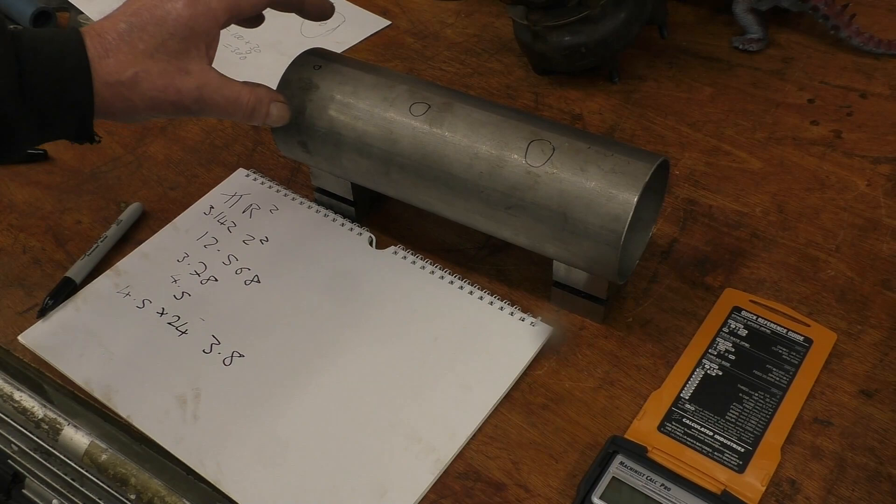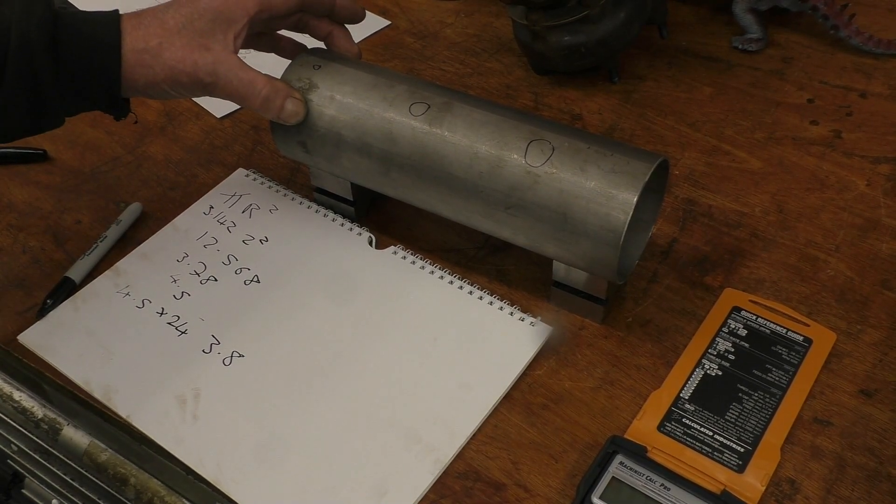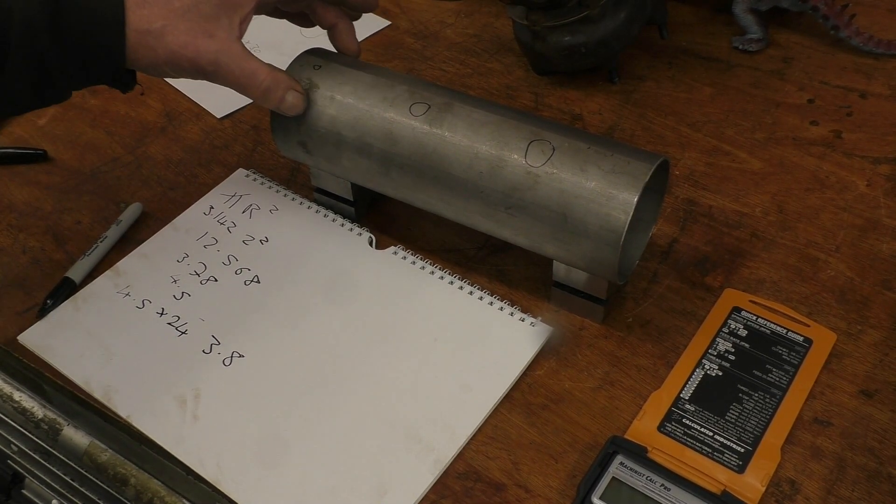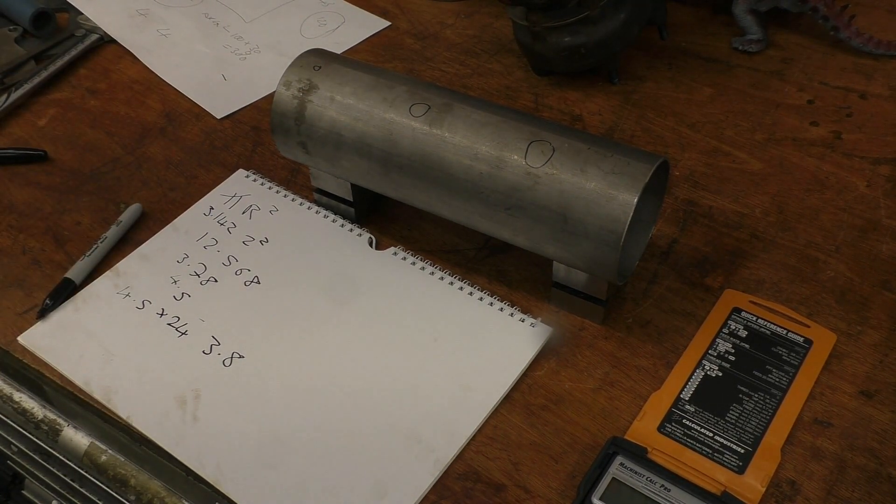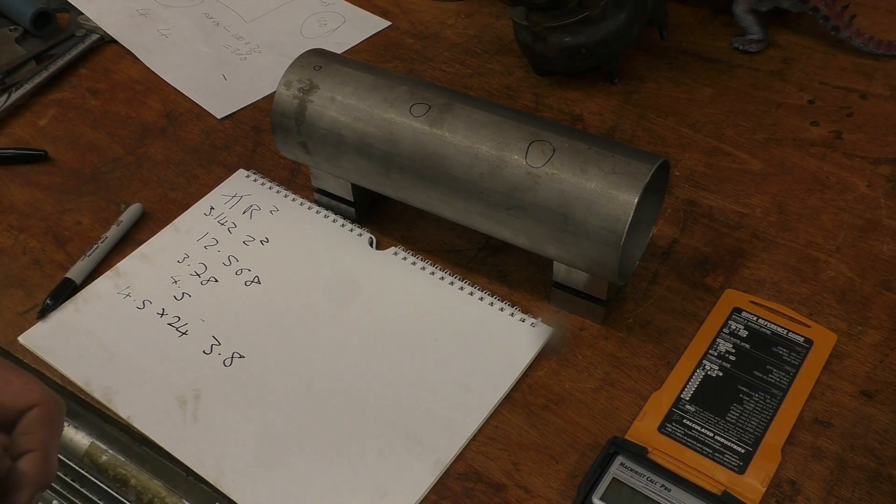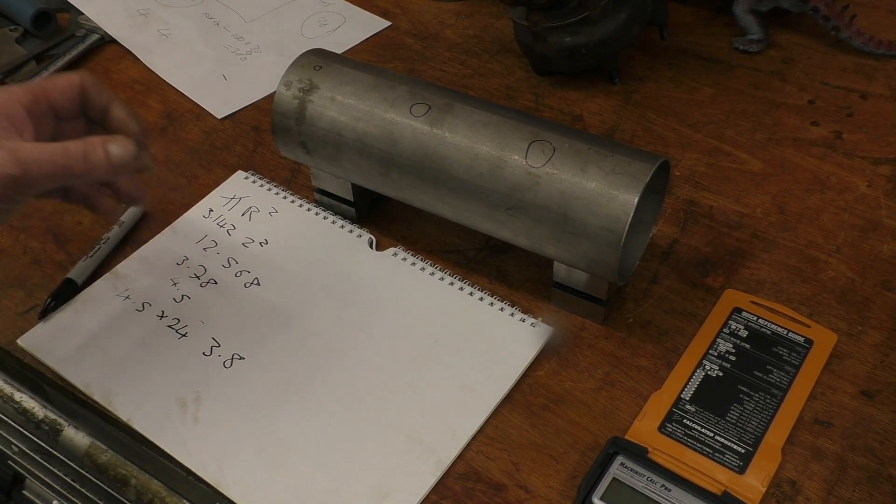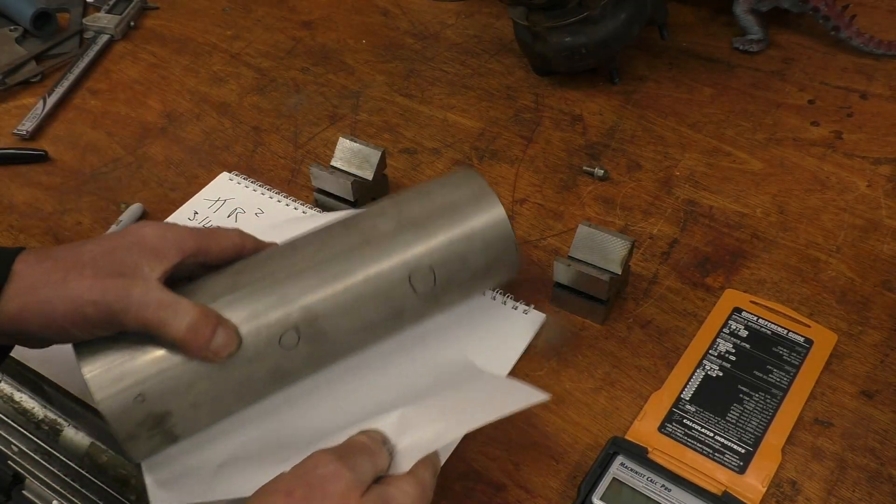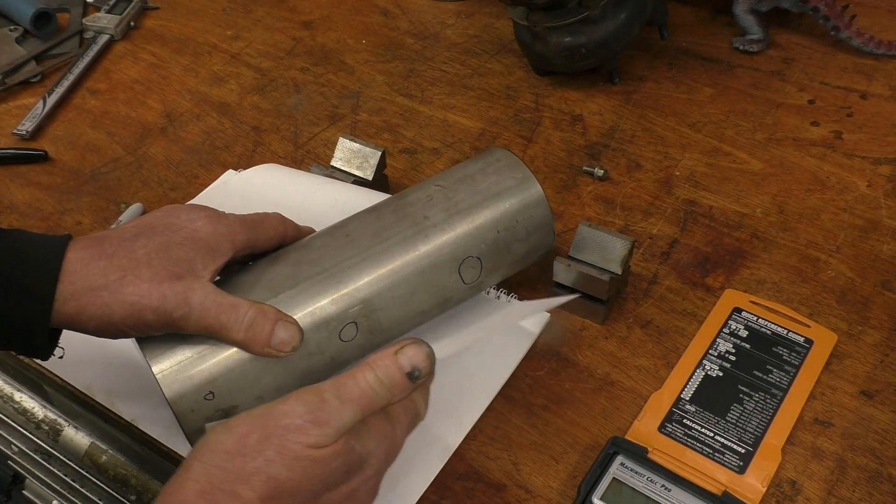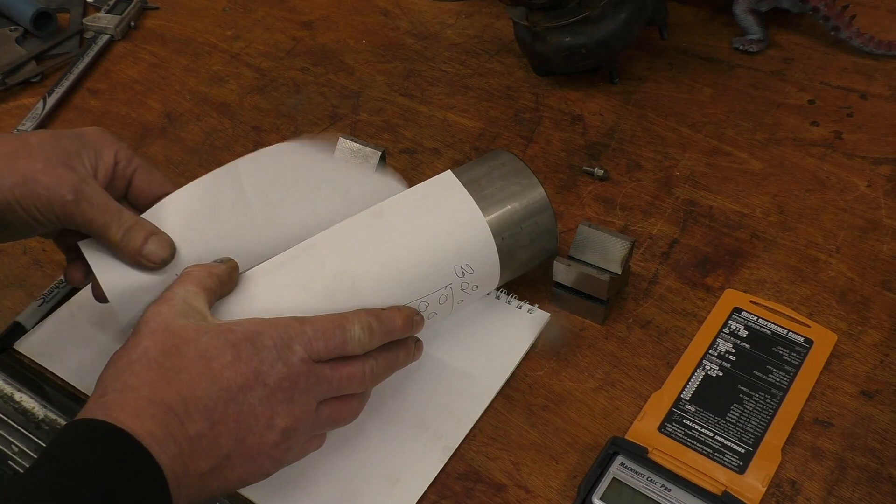So if I put 24 4.5mm holes in the end of here, it's going to give a surface area of 3.8 square centimeters, which is 30% of the 12.5 square centimeters of the inducer. So if I need this up into 24, or two rows of 12 actually.